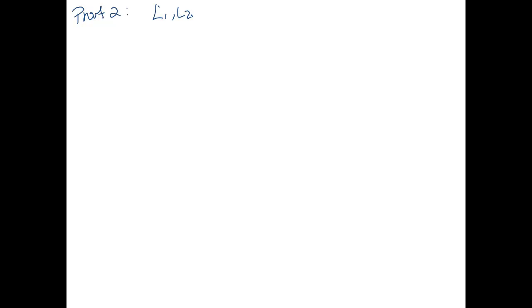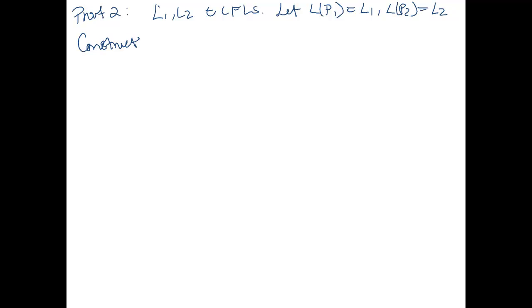Let's do a second proof just for practice — proof 2. Again, L1 and L2 are context-free languages. Let the language of P1 be L1, so P1 is a PDA that accepts L1. And the language of P2 is L2, so P2 is a PDA that accepts L2. We're going to construct a PDA P for L1 union L2.